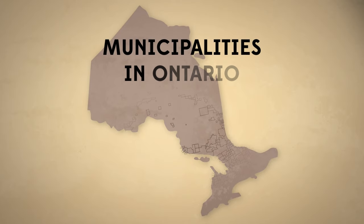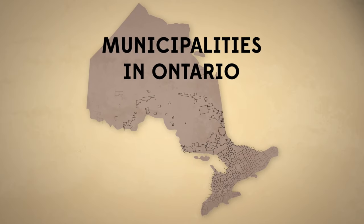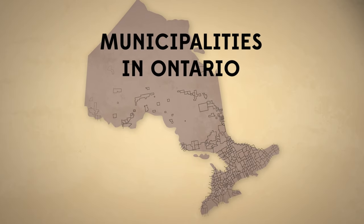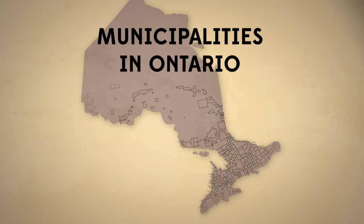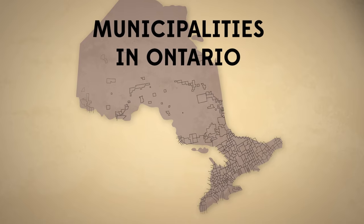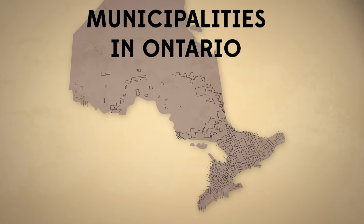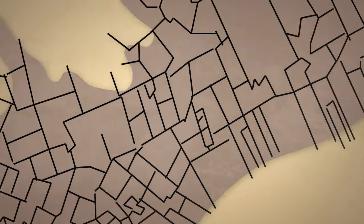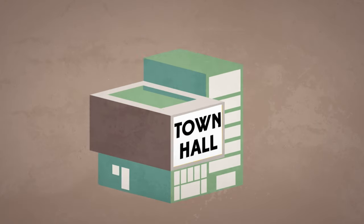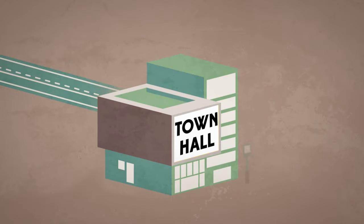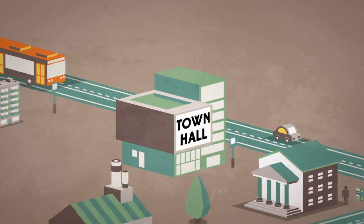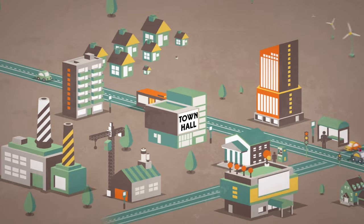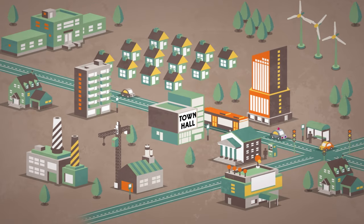Ontario is divided into 444 different communities called municipalities. Each municipality has its own local government, which is responsible for the planning, safety, and growth of their community.